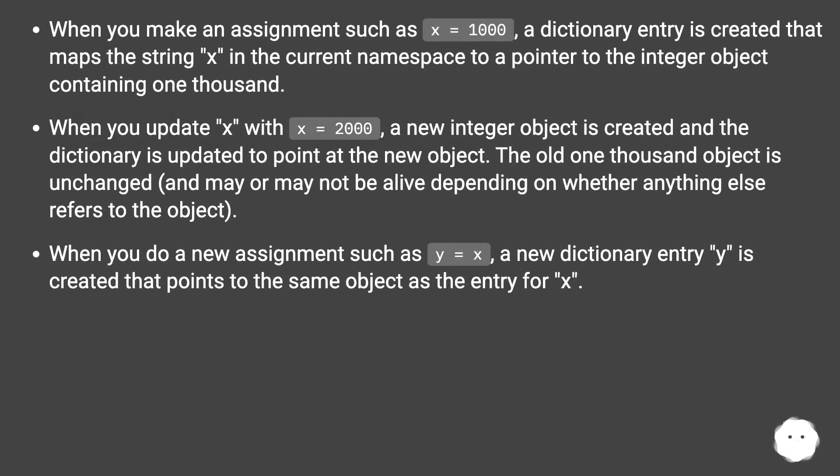When you make an assignment such as x equals 1000, a dictionary entry is created that maps the string 'x' in the current namespace to a pointer to the integer object containing 1000.